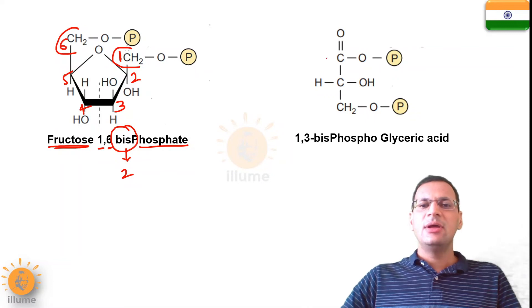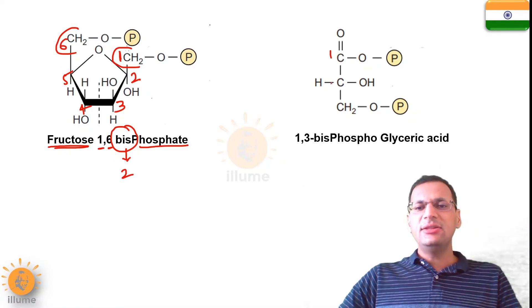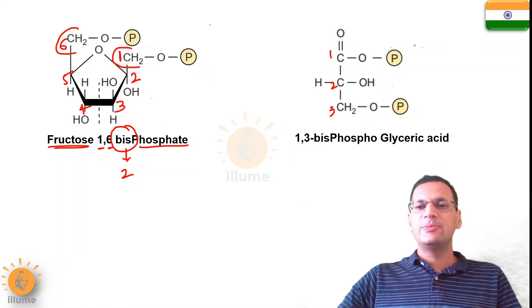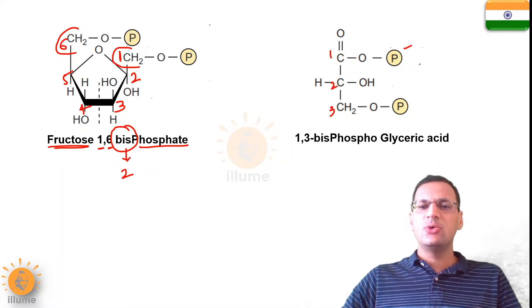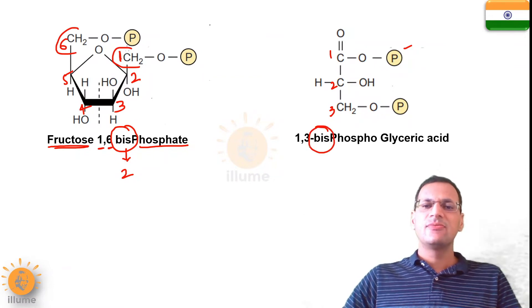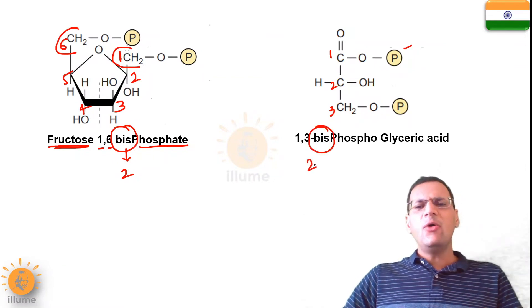The second example is 1,3-bisphosphoglyceric acid. Again, on the first and third carbon of glyceric acid, phosphate groups are attached, so it again becomes 'bis'.